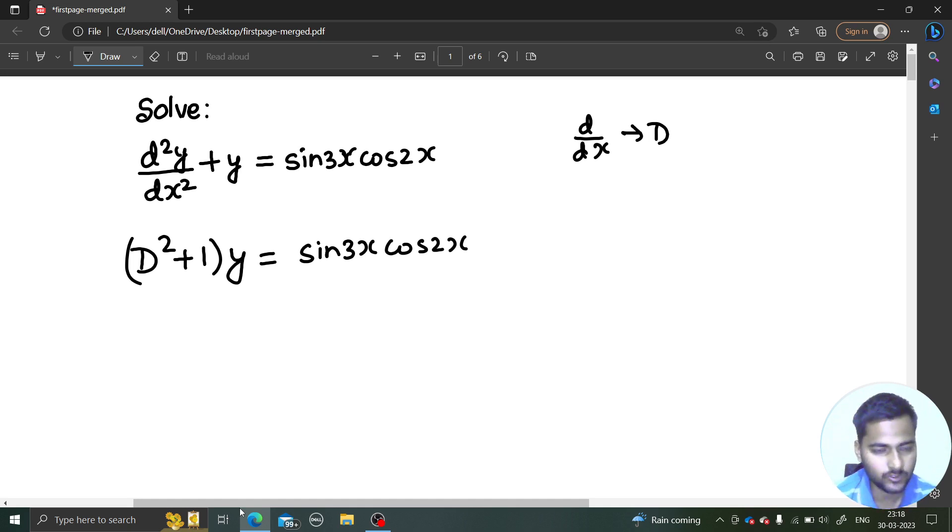Next step is to write the auxiliary equation. For that, just replace this capital D which you are seeing by m. So m² + 1 and equate it to 0. From here you are getting m² as -1, so m is ±i.